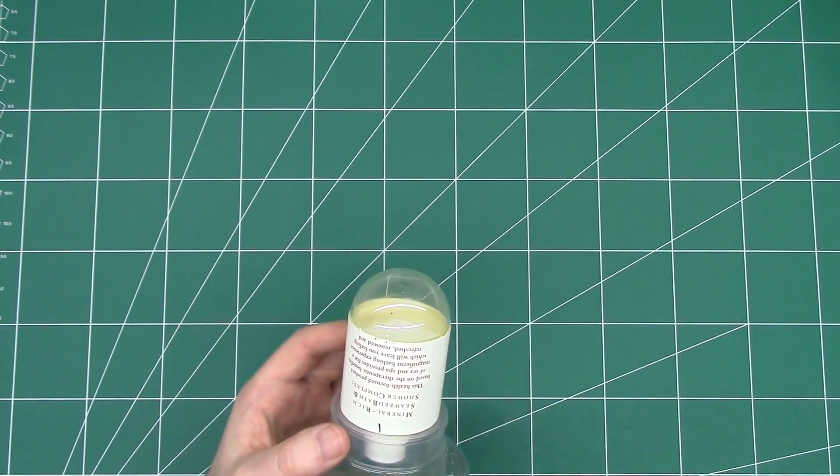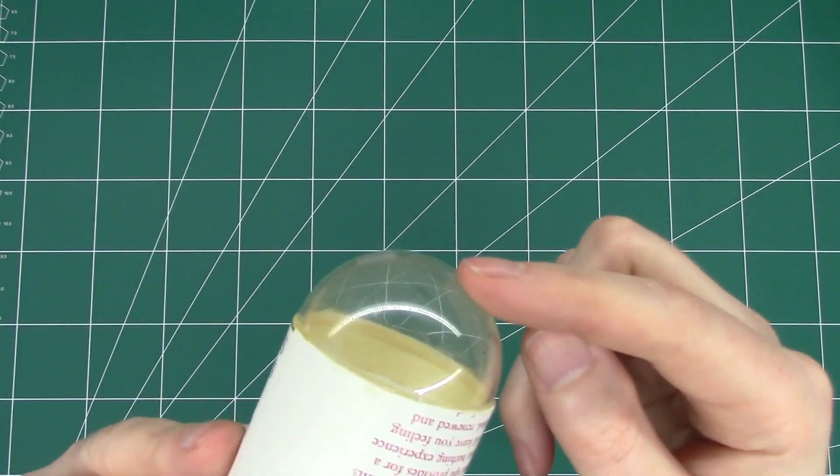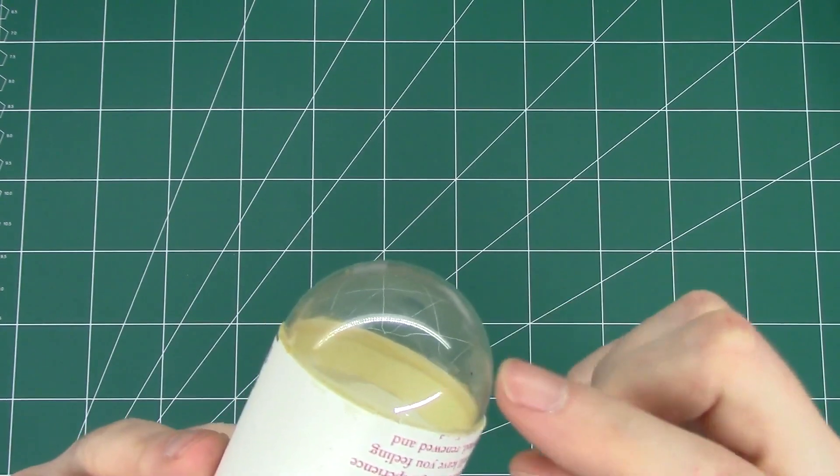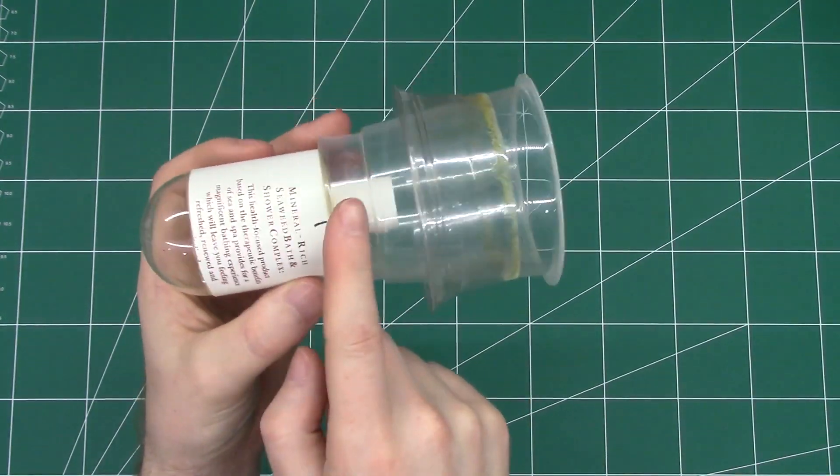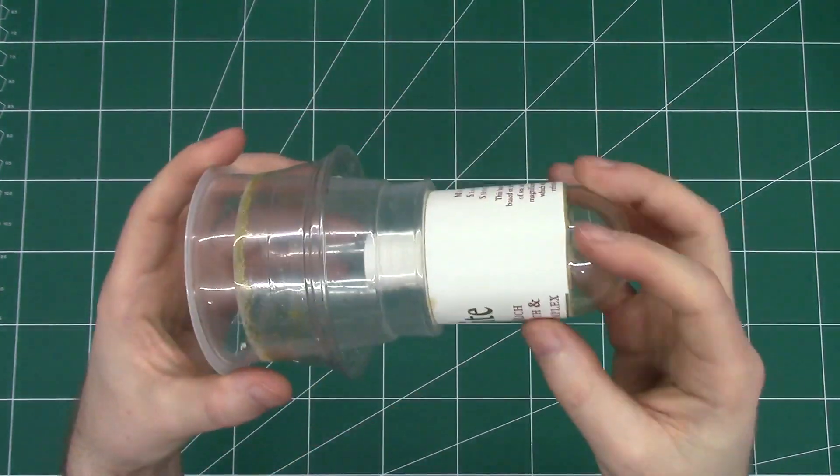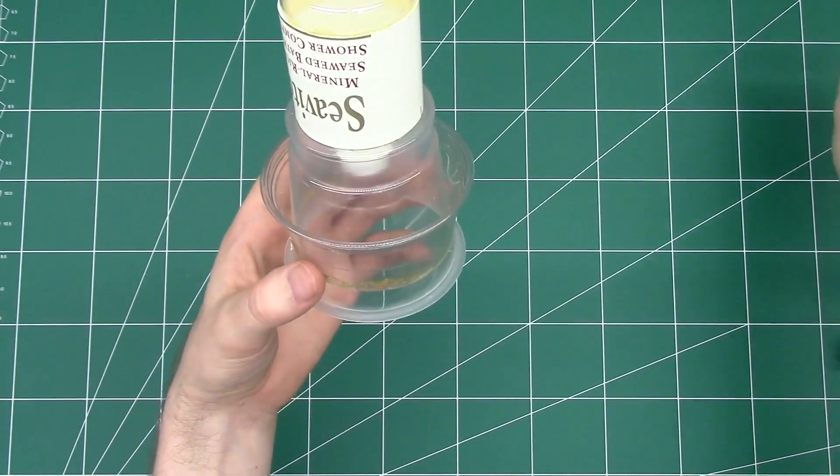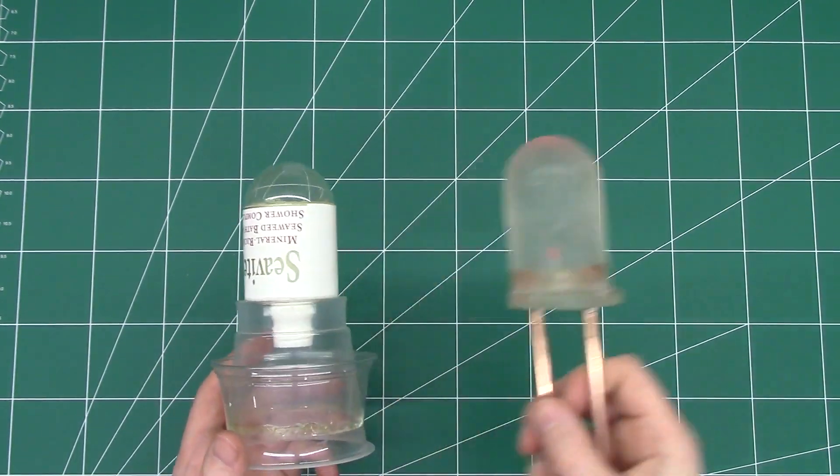This plastic here is from a shampoo bottle. I then got a bauble from like a Christmas tree decoration, which was about the right size. Then I got a plastic, probably like a yogurt container. This is like a drinks container. So I made up this rough form, which is approximately the right shape, just a little bit bigger than my desired result.